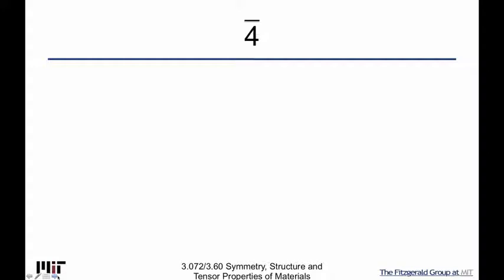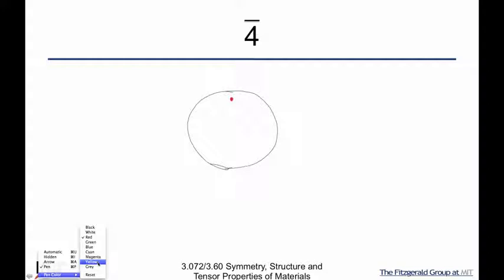Now, if you think about 3-bar, you could say — are there other combinations? Certainly if I take a four-fold axis and just add an inversion center, I get 4-over-m. But let's think a little outside the box, which is the only way to arrive at this one. I start with a red dot, do a four-fold axis rotation — pi over 2 — but let's fold in a little concept like our glide operator, where we say: can we have a unique new kind of step?